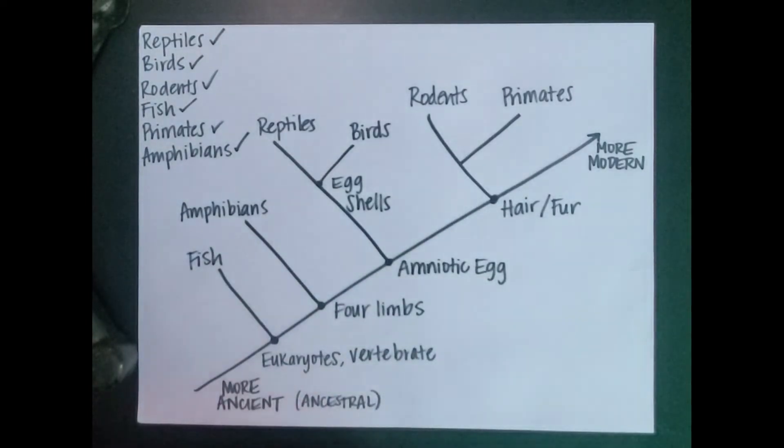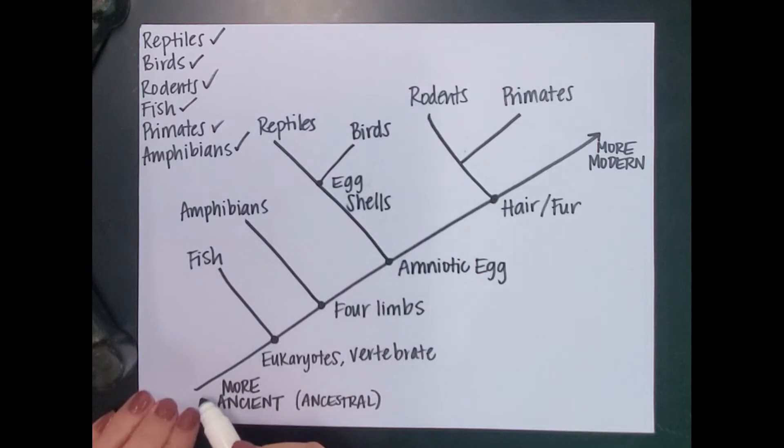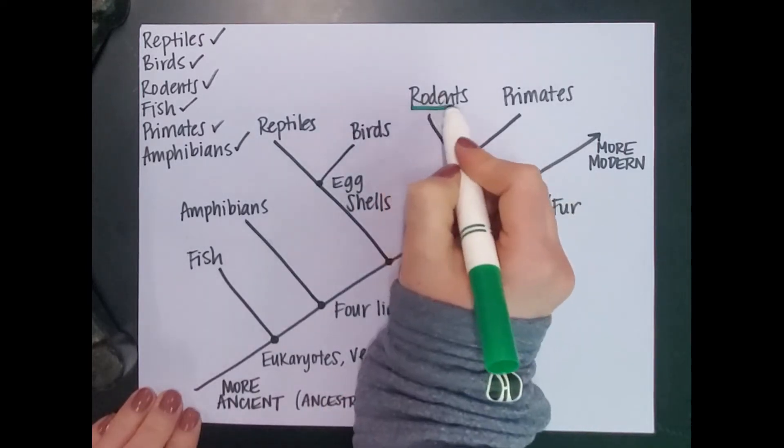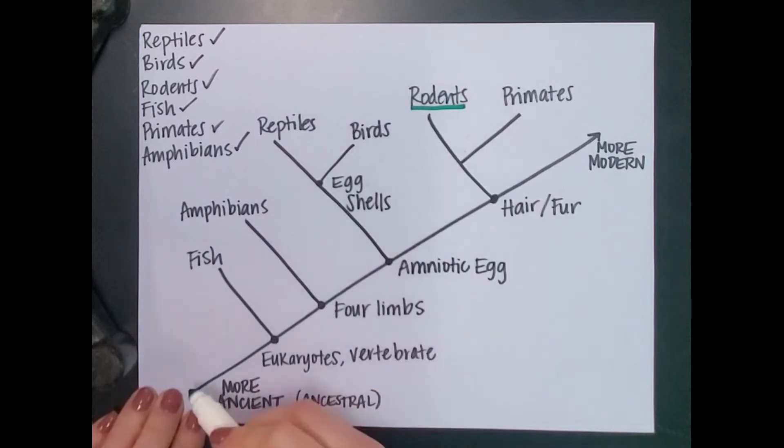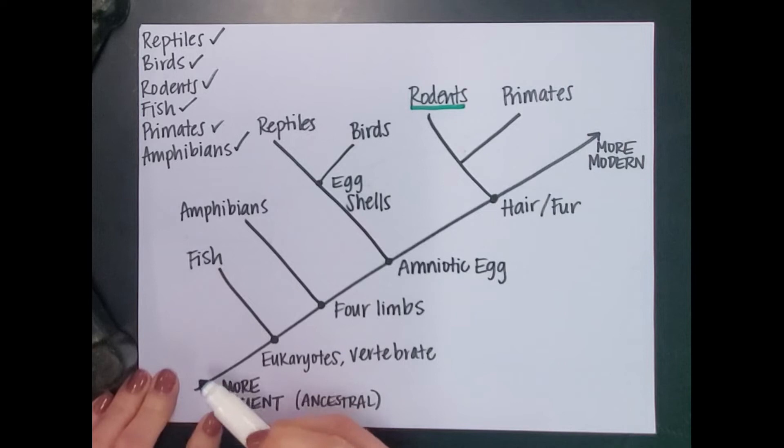Now I want to show us how to read this a little bit. I'm going to grab a different color of marker so we can draw along these lines. If I'm trying to figure out what characteristics rodents have, for example, I need to draw a line or trace all the way up to where I've written rodents. So I'm going to trace along this line here. Whatever I pass through will be a characteristic.